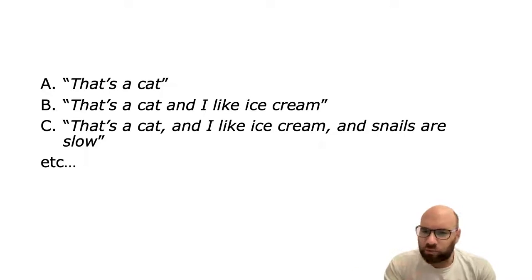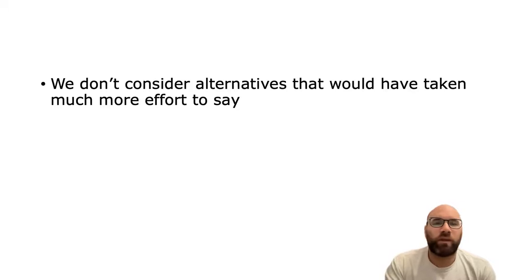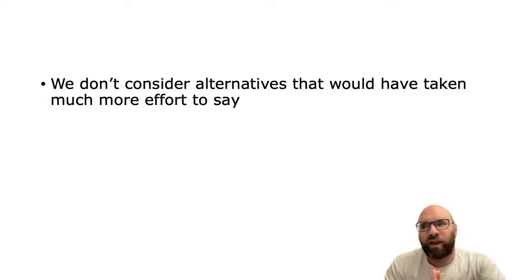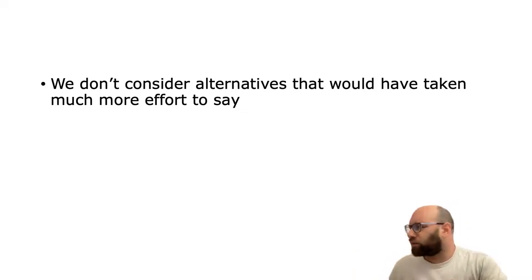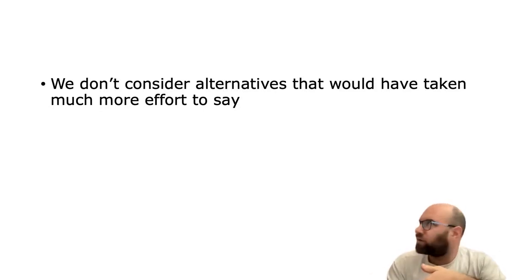There are at least two things that could explain why this happens. First, it seems like we don't think about alternatives that would have taken a lot more effort to say. If I say 'that's a cat,' maybe people don't ask why I didn't say 'that's a cat and 20 other things,' because the answer is already obvious — maybe I didn't want to spend 10 minutes spelling out a million things. So they might not consider alternatives that are much longer and much more detailed than what I said.